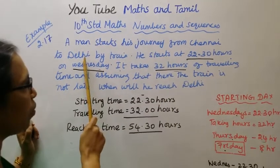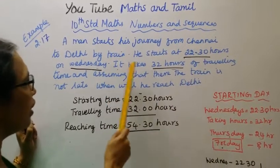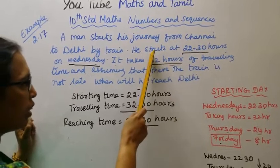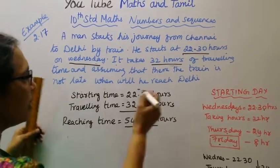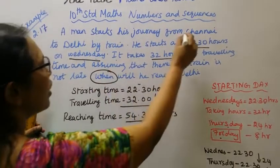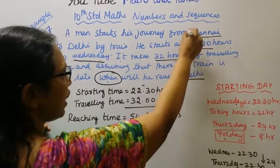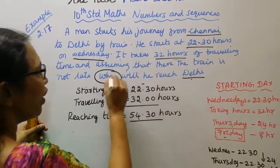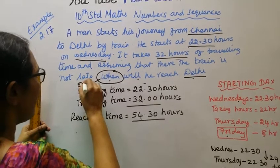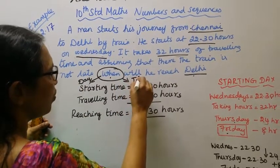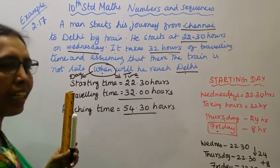Chennai from Delhi by train he goes. What timing? 22.30. He goes to Delhi, takes 32 hours. Train is not late. When will he reach Delhi? Chennai from Delhi. When will he reach Delhi? What day, what time. We can calculate this easily in our mind.